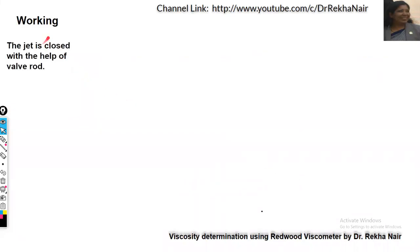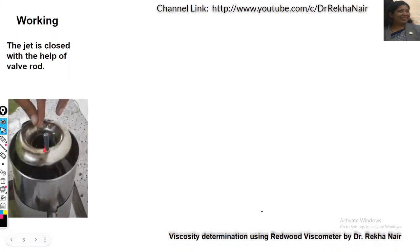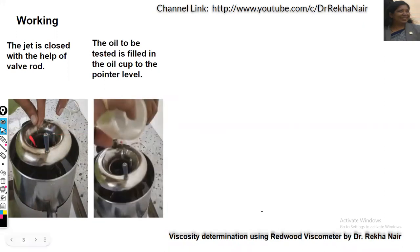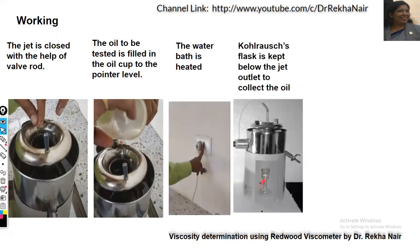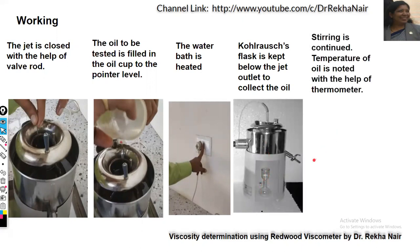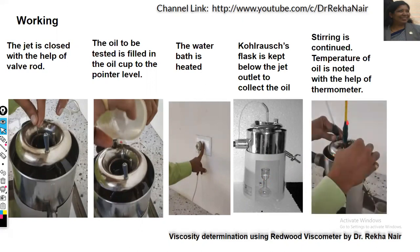Let us discuss the working. The jet is closed with the help of the valve rod. The oil to be tested is filled in the oil cup up to the pointer level. The water bath is heated. A conical flask is kept below the jet outlet to collect the oil. Stirring is continued and the temperature of the oil is noted with the help of the thermometer that is put in this oil cup.